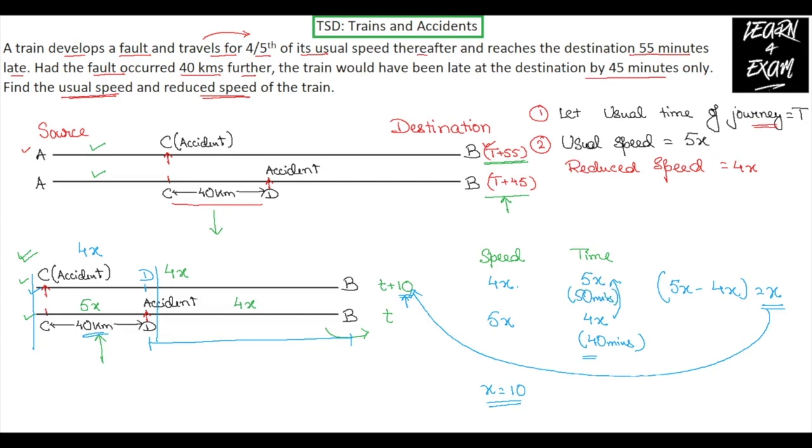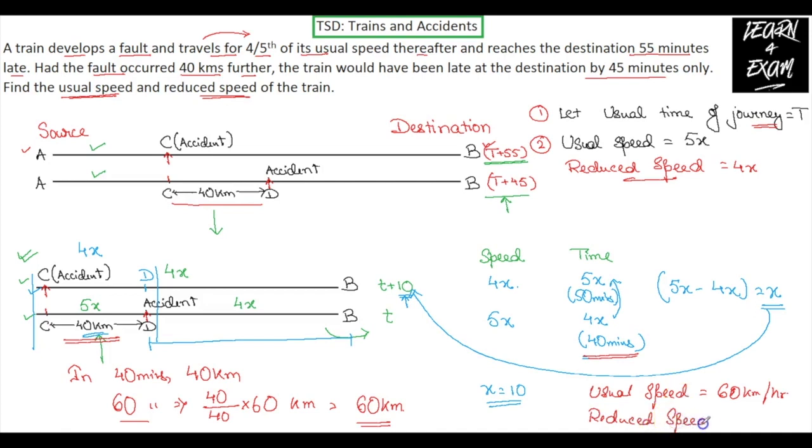Now, the things become really easy for us. In 40 minutes, in the second case, the train is traveling for 40 kilometers. So, in 40 minutes, the train travels for 40 kilometers. So, in 60 minutes, the train would travel for 40 divided by 40 into 60 kilometers, which is equal to 60 kilometers. In 60 minutes, it covers 60 kilometers. That means, the usual speed of the train would be equal to 60 kilometers per hour and the reduced speed would be equal to four-fifths of the speed that comes out to be 48 kilometers per hour. I now hope that these kinds of problems will not create any kind of difficulties in your preparation or in the exam paper.